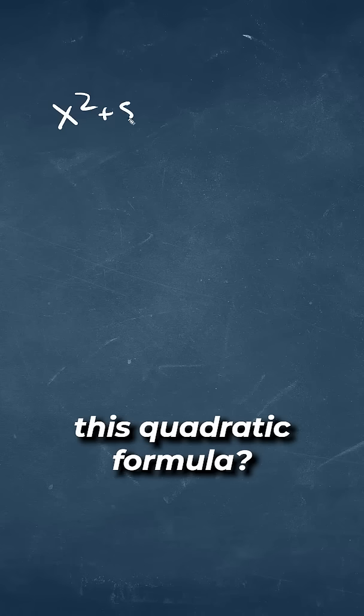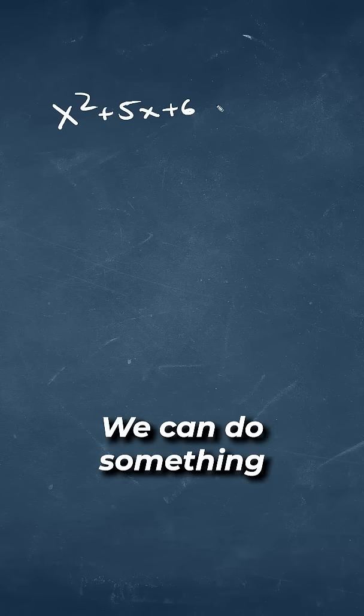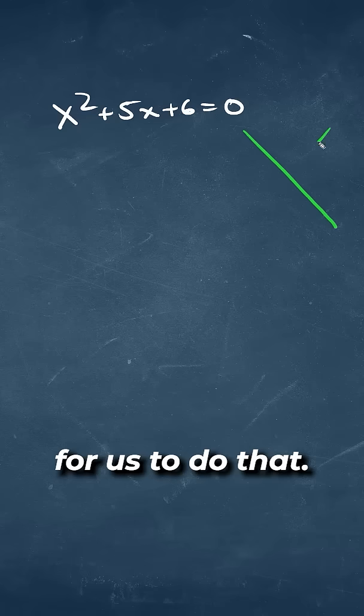So how would you factor out this quadratic formula? We can do something called the diamond method to make it easier for us to do that.